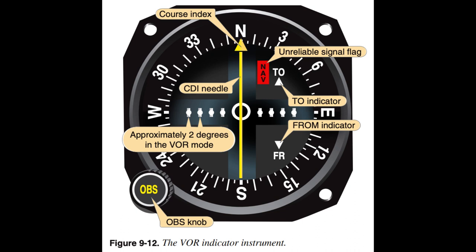Omni-Bearing Selector (OBS). The desired course is selected by turning the OBS knob until the course is aligned with the course index mark or displayed in the course window. Course Deviation Indicator (CDI). The CDI is composed of an instrument face and a needle hinged to move laterally across the instrument face. The needle centers when the aircraft is on the selected radial or its reciprocal. Full needle deflection from the center position to either side indicates the aircraft is 12 degrees or more off course, assuming normal needle sensitivity. The outer edge of the center circle is 2 degrees off course, with each dot representing an additional 2 degrees.